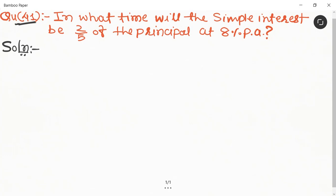Quantitative aptitude chapter simple interest question number 41. In what time will the simple interest be 2/5 of the principal at 8% per annum? So in this question, find the time if the simple interest is 2/5 of the principal.